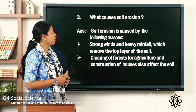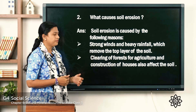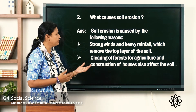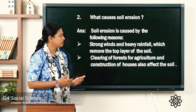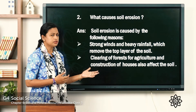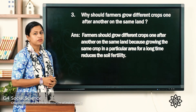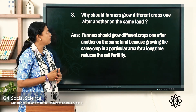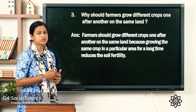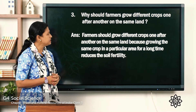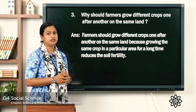The second question is: what causes soil erosion? Soil erosion is caused by the following reasons — strong wind and heavy rainfall which remove the top layer of the soil; and clearing of forests for agriculture and construction of houses also affects the soil. The third question is: why should farmers grow different crops one after another on the same land? Farmers should grow different crops because growing the same crop reduces the fertility of the soil.